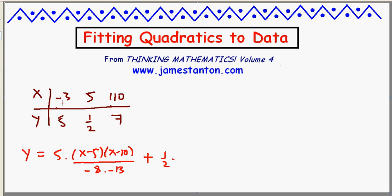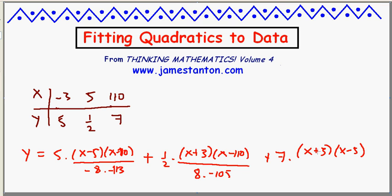When x is -3, I need to counteract this numerator. So when x is -3, I'll need -8 on the bottom and -113. First term done. Now I'd like an output of 1/2. I'd like that to occur when x is 5, so I want it to vanish for x equals -3 and for x equals 110. When x is 5, I want a term of 8 to counteract and -105. And finally, the third term, when x is 7... wait, when x is 110, I'd like to counteract x being -3, counteract x being 5, leaving me with just x equals 110 of interest, which means I need 113 on the bottom and 105 on the bottom. There it is. There's a quadratic that does the trick.